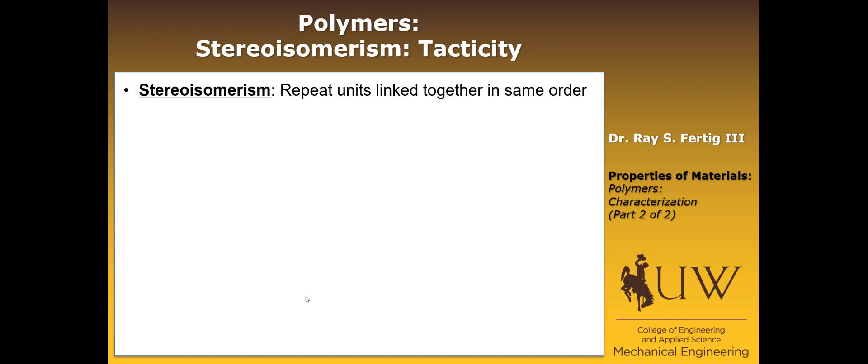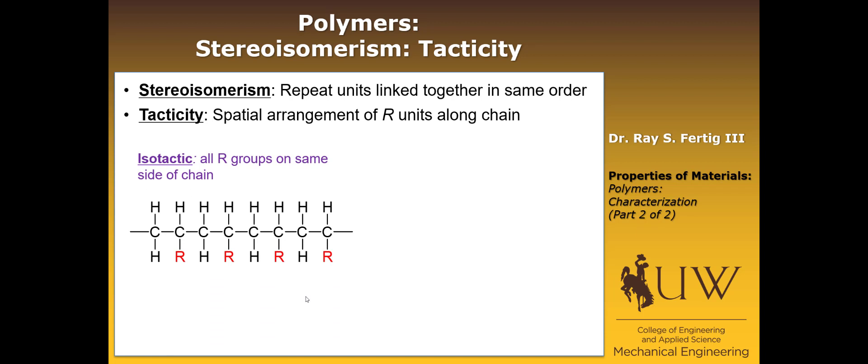For example, it would be the repeat units linked together in the same order. The tacticity is how the R units along the chain are arranged. So let me just briefly talk here. So we have this region right here would be a repeat unit. So with two carbons, three hydrogens in this R group. And you can see they're stacked in the same order. So this is the tail and this is the head. They're stacked head to tail, head to tail along this chain.